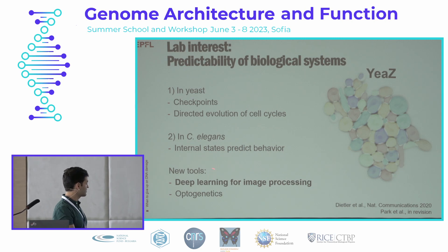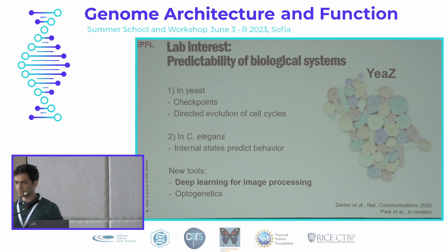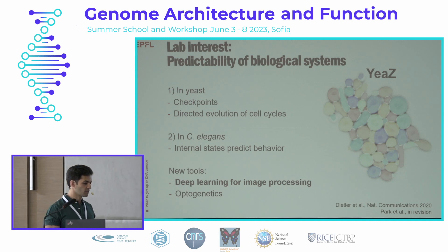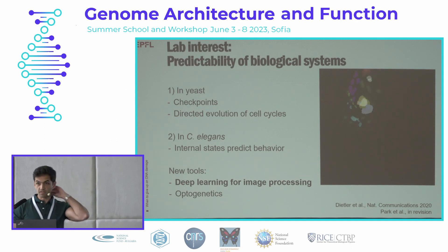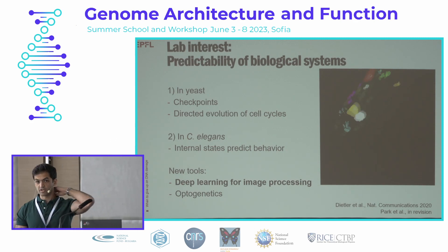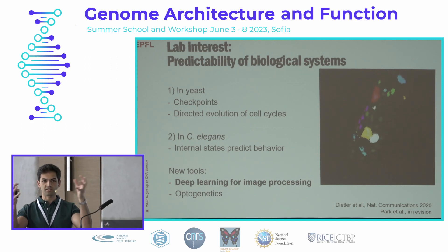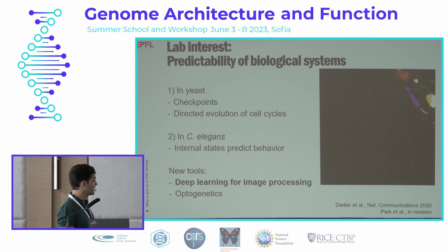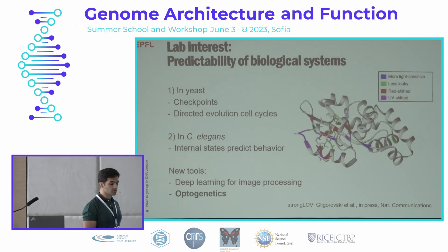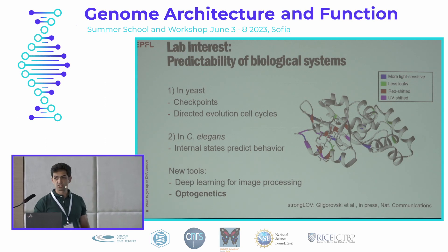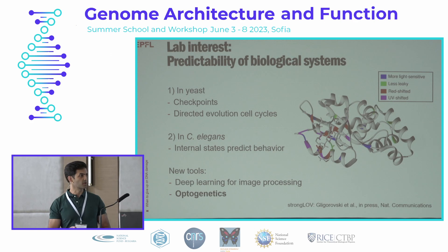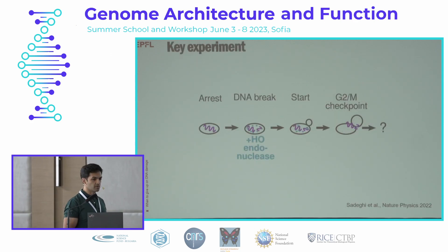We have a bunch of projects on deep learning for image processing. We published a few years ago a neural network for analyzing yeast images. Now we're working on tracking and lineage tracing in yeast. We're doing the same for C. elegans — tracking objects inside of an object that's itself deforming and moving around. And we're creating optogenetic tools: mutants of LOV domain proteins that make these optogenetic tools more light sensitive or less leaky, or shifting the spectrum to which these proteins respond. Okay, now to the main subject of my talk.